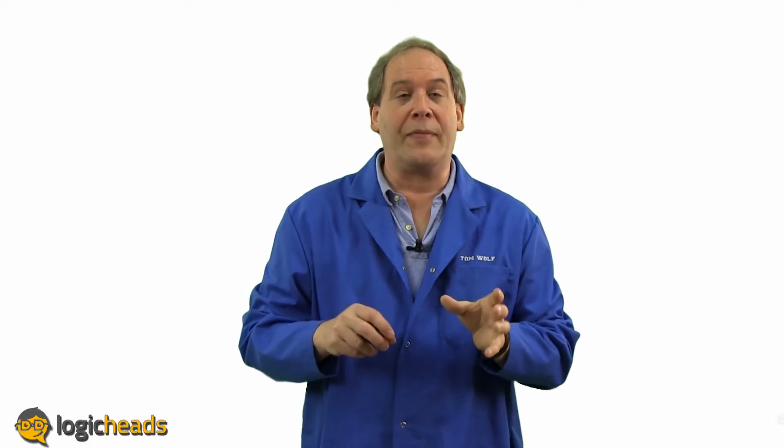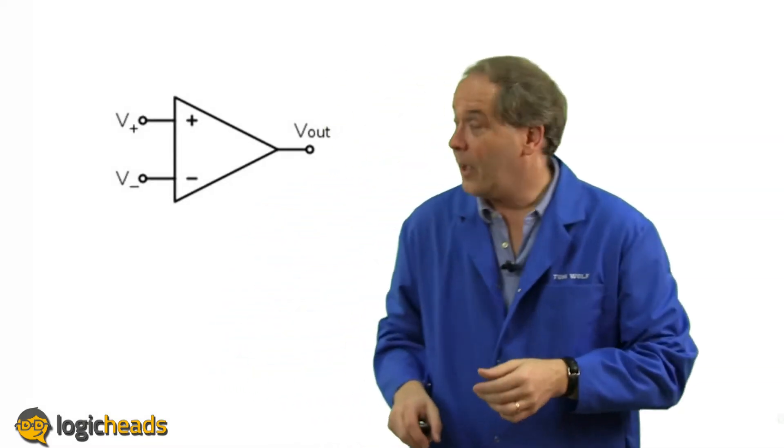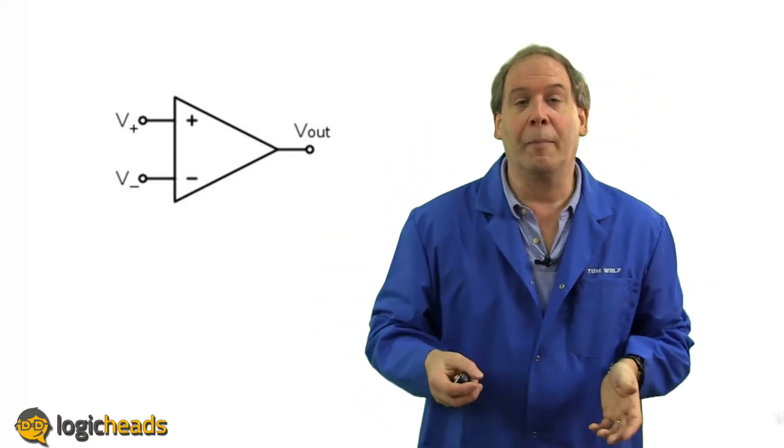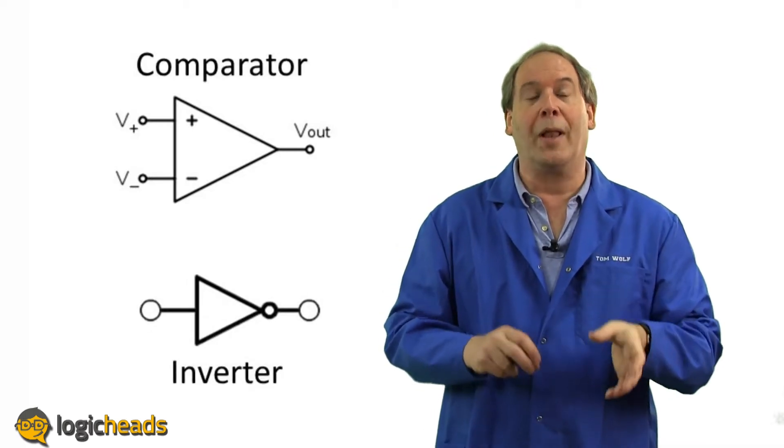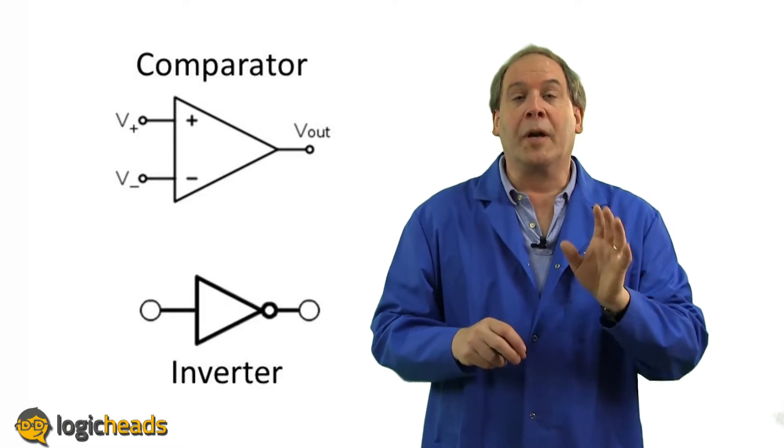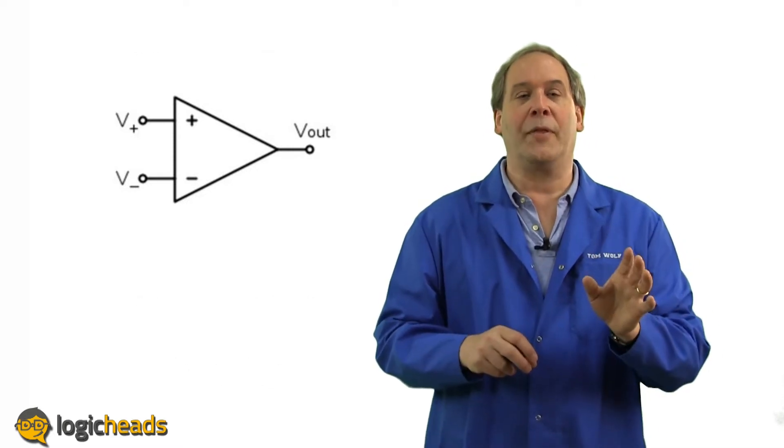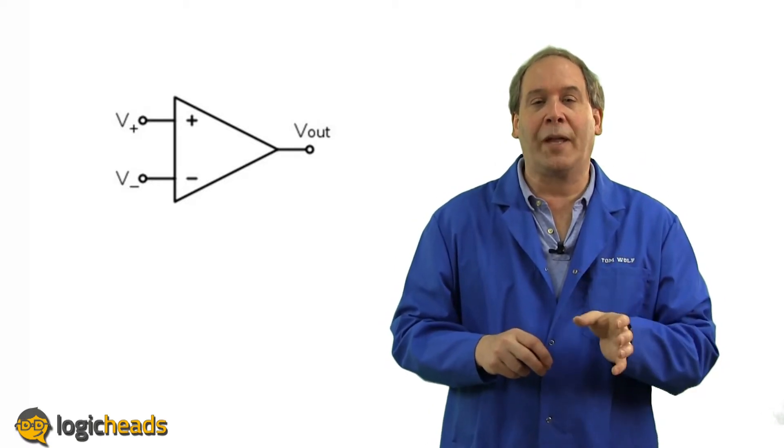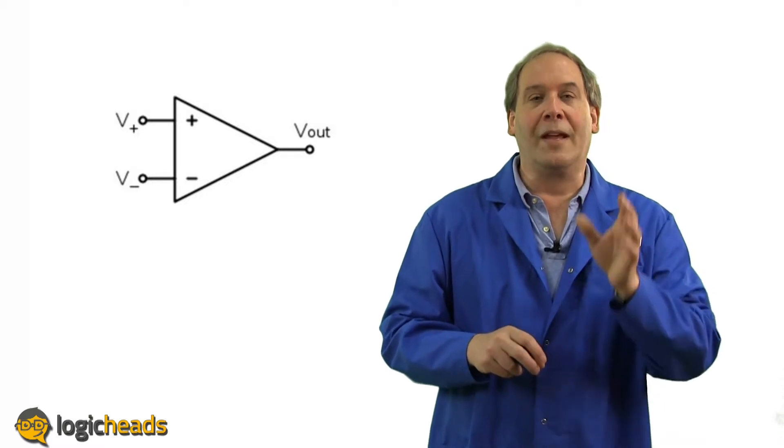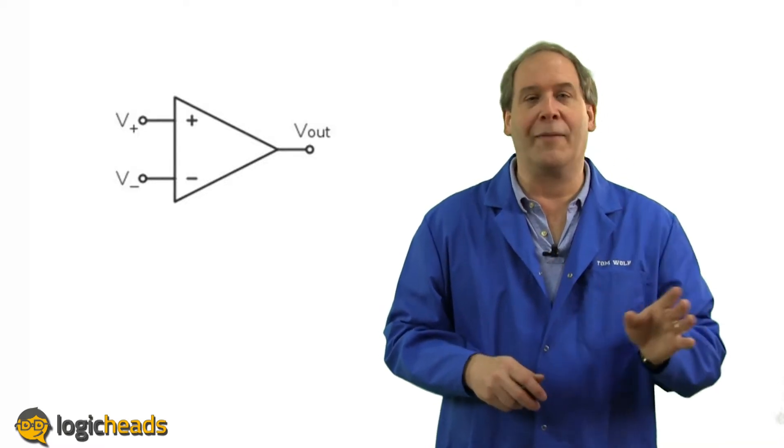The function of a comparator is right there in the name. It compares two voltages together and tells you which one is higher. This is the symbol for a comparator. Now, don't confuse it with a symbol for a digital inverter. An inverter has only one input while a comparator has two. Actually, the comparator is one of the oldest integrated circuits, right back there with the first digital logic gates. But by applying modern semiconductor fabrication to these devices, they can now go places where they could never go before.